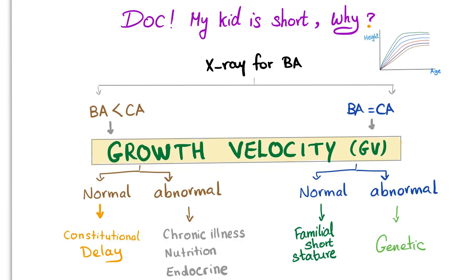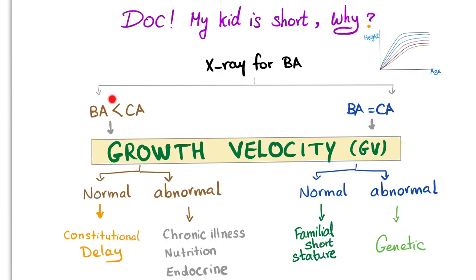In constitutional delay, bone age is less than chronological age. The parents are of normal height — you look at the father and the mother, they are normal in height. However, if you ask the father, you may hear that he was short as a child but eventually reached normal height. They're called late bloomers. The child has always been short, below the fifth percentile, before the onset of delayed adolescence. Even the adolescence will be delayed in both onset and in the adolescent growth spurt.